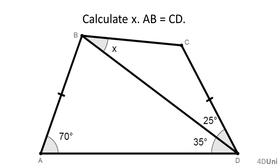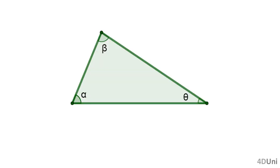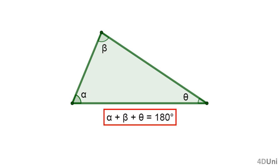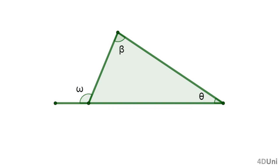One of the well-known properties in a triangle is that the sum of the measures of the three internal angles is equal to 180 degrees. Another property is that the measure of any external angle at one vertex is equal to the sum of the measures of the two internal angles corresponding to the other vertices.